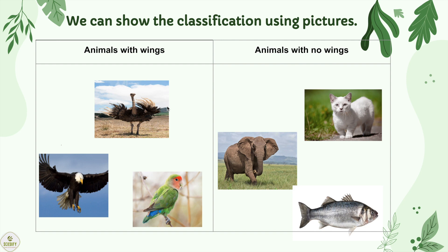An ostrich, an eagle, a parrot — they have wings. A cat, an elephant, a fish — they do not have wings.